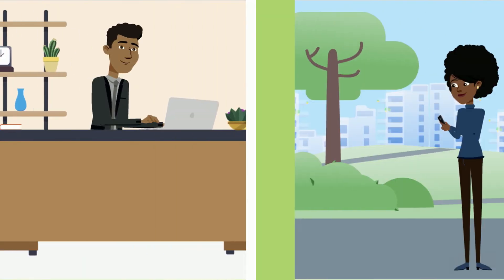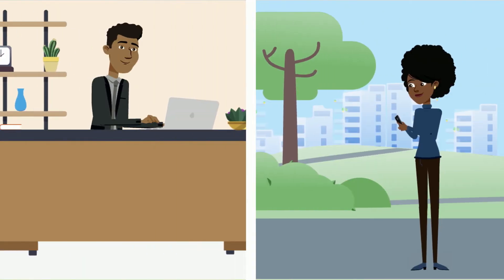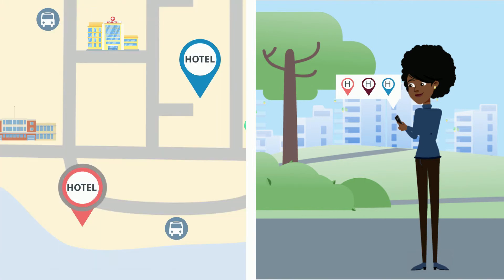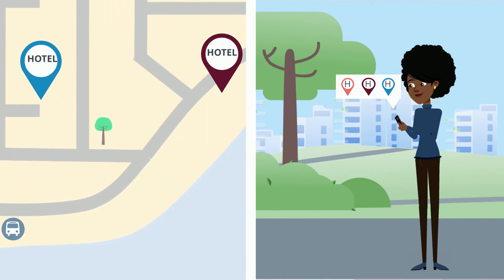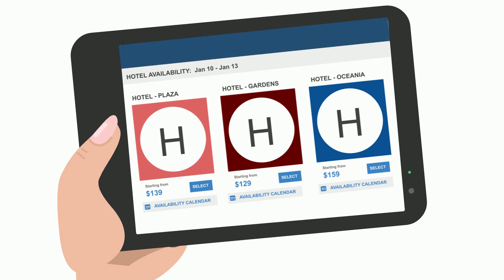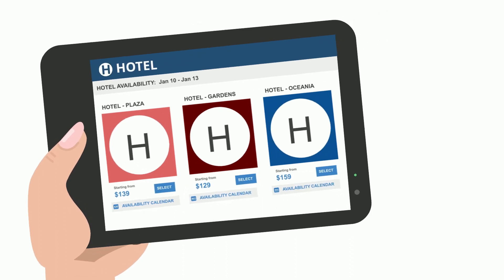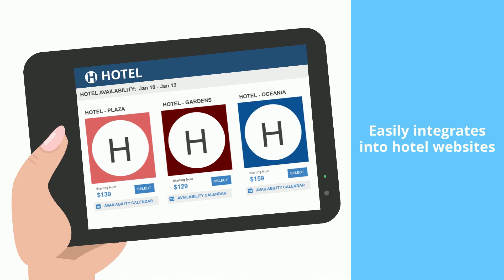The multi-property booking engine allows your hotel staff and website visitors to search availability across all properties within the group, so if a guest's first choice is fully booked, they can discover one of your nearby locations. The multi-property online booking engine is customizable to reflect your branding and is easily integrated into your group website or member property websites.